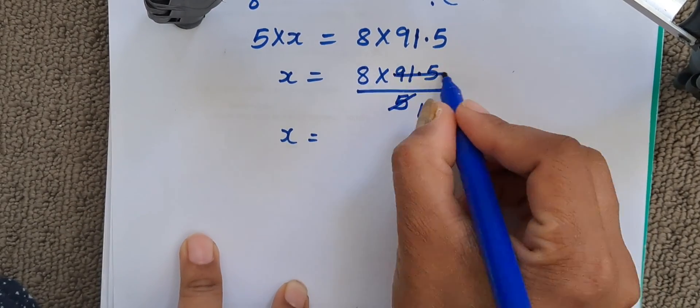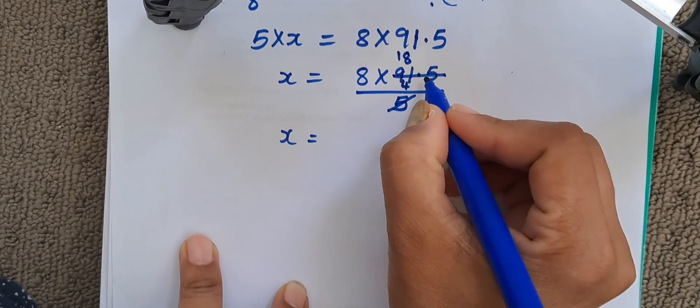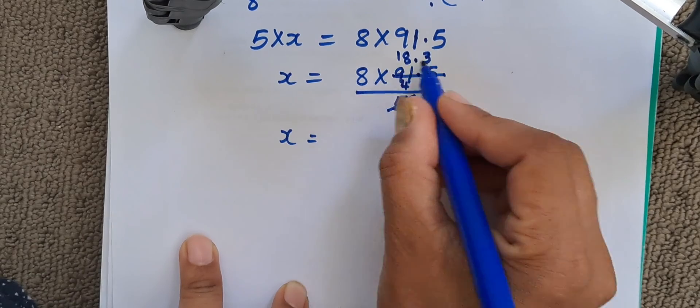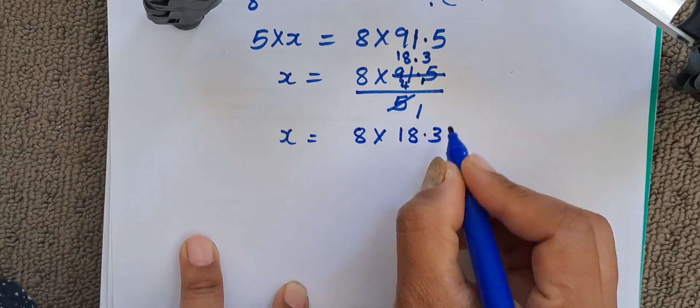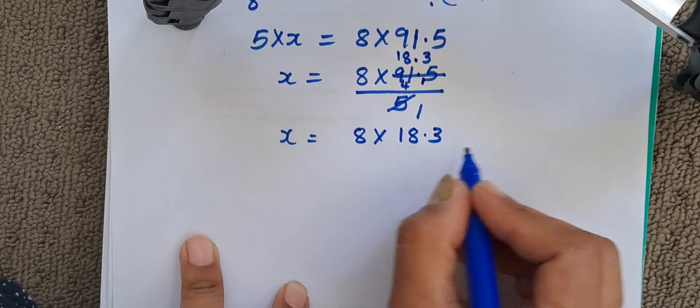5 1s are 5, 5 1s are 5, 4 is the remainder. 5 8s are 40, 1 is the remainder. Point remains as it is. 5 3s are 15. So it is 18.3 into 8. 8 into 18.3 divided by 1 is nothing but it is 8 into 18.3.